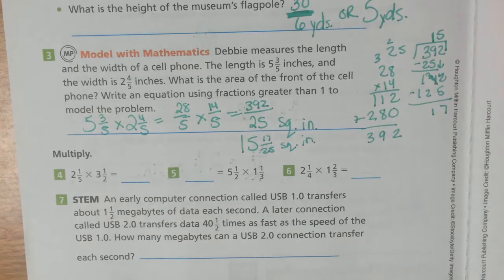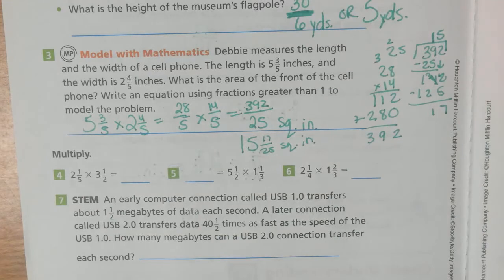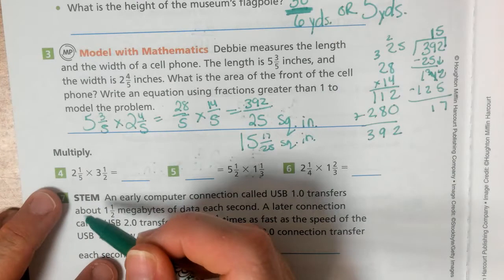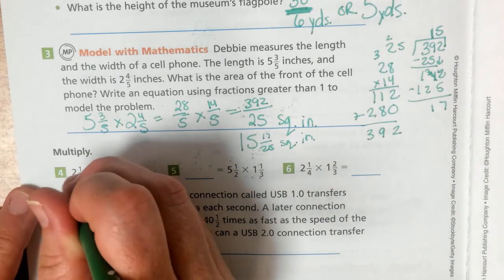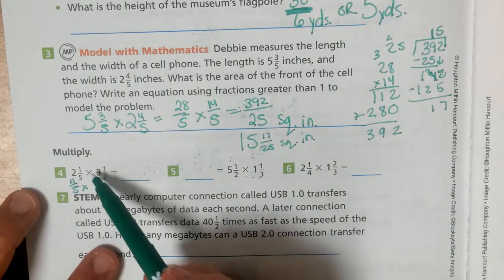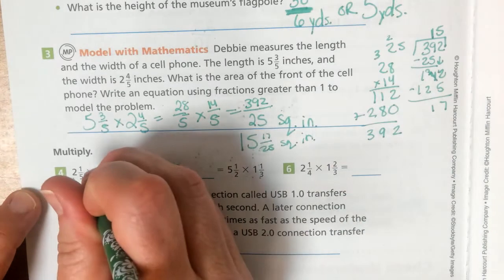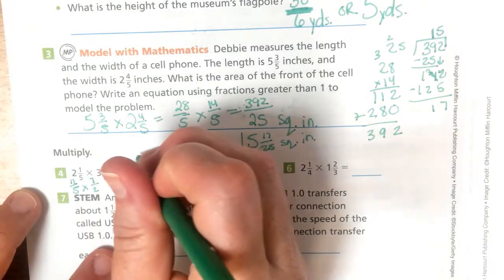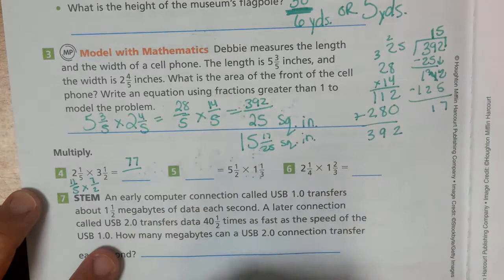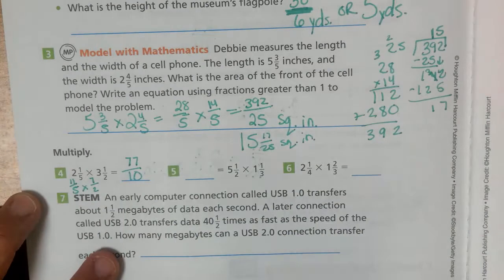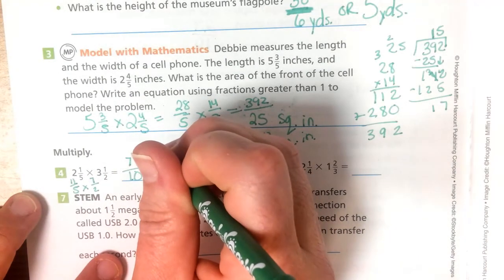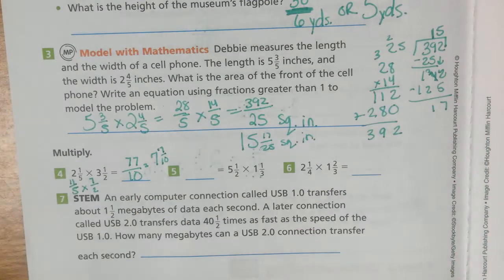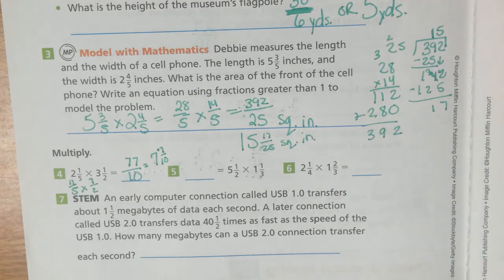All right. Next one to multiply. 2 and 1 fifth times 3 and 1 half. So, 2 times 5 is 10 plus 1. We'd have 11 fifths times 3 times 2 is 6 plus 1 is 7 halves. So, 11 times 7 is 77. 5 times 2 is 10. It would be the same as 7 and 7 tenths. If you did the conversion. But, either answer is acceptable.